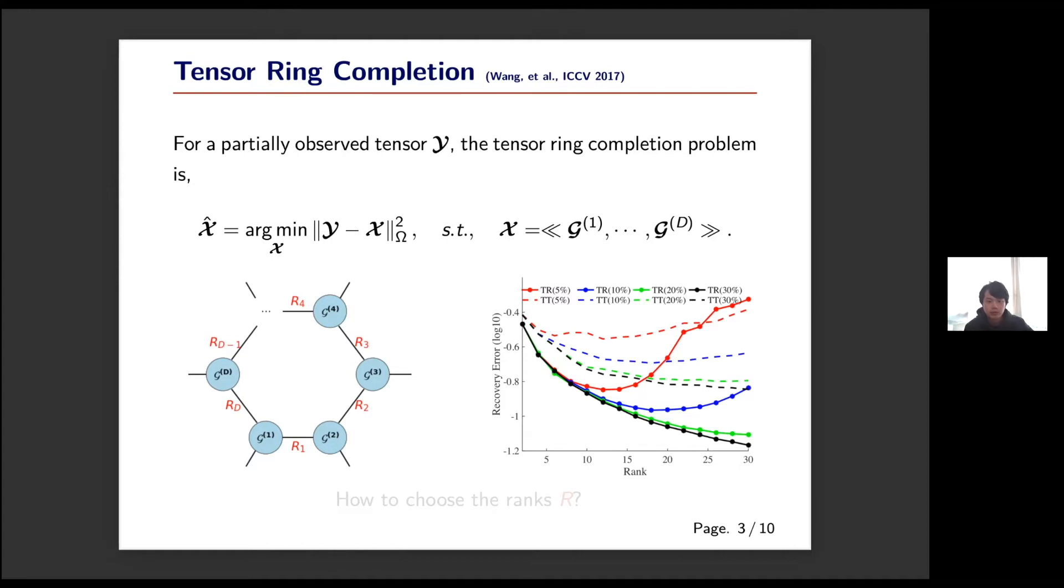The tensor ring ranks are also called the boundary dimensions in the tensor network language. The right figure here shows how the prediction error changes with the tensor ring ranks. This raises a very natural question: how can we choose the tensor ring ranks in practical problems?